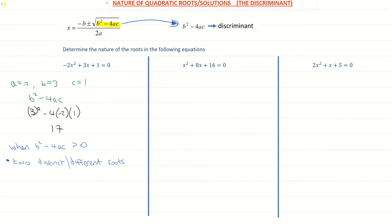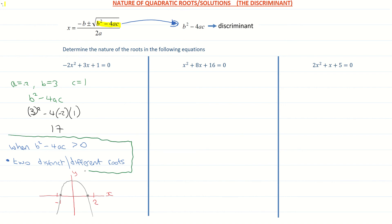On our coordinate graph, this is a negative quadratic. It doesn't tell us exactly where it crosses the x-axis, just that there are two distinct or different roots. So our first scenario: when b squared minus 4ac is greater than 0, we have two distinct roots.